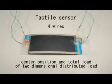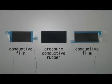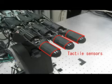This tactile sensor is a sheet-like object with only four wires. This sensor can measure the center position of a two-dimensional distributed load and the total load within one millisecond.